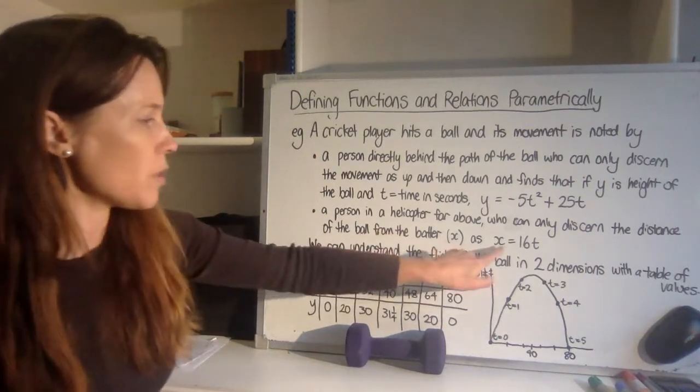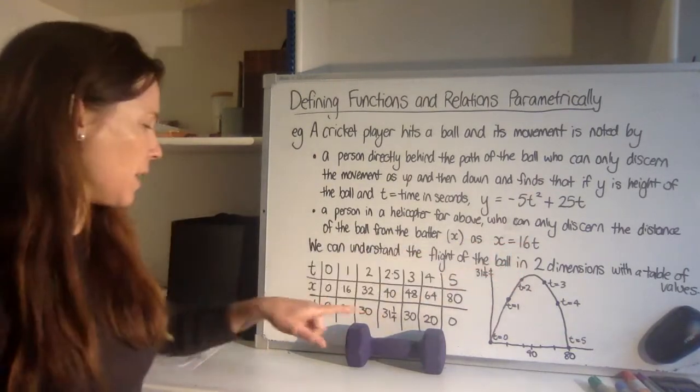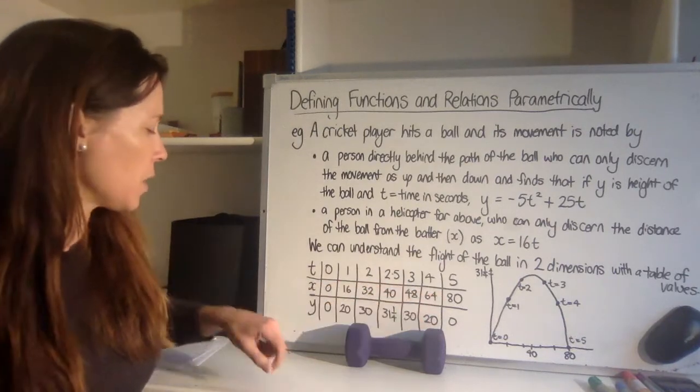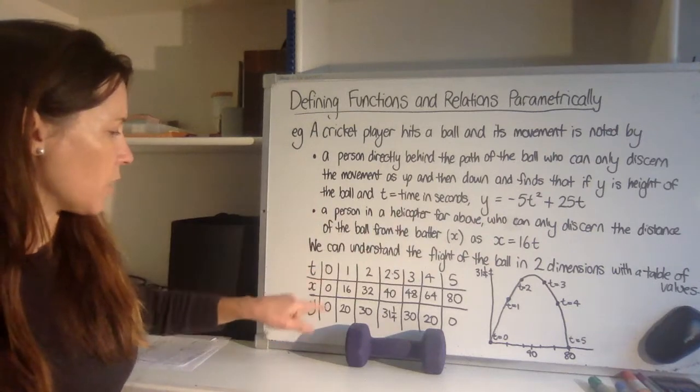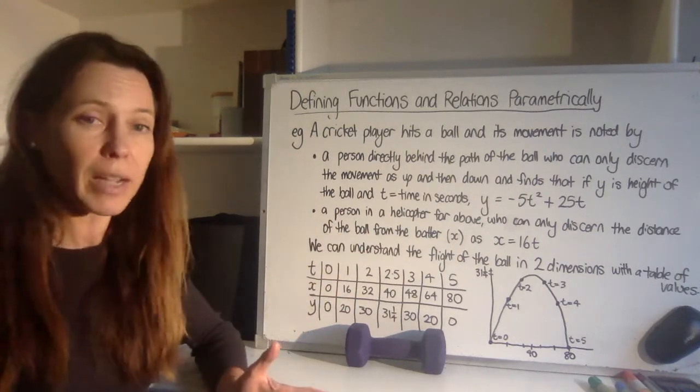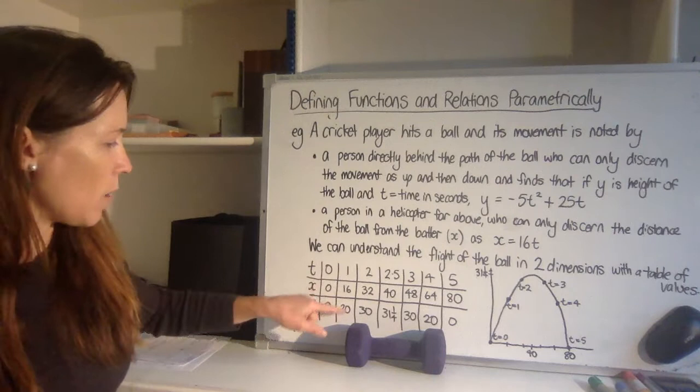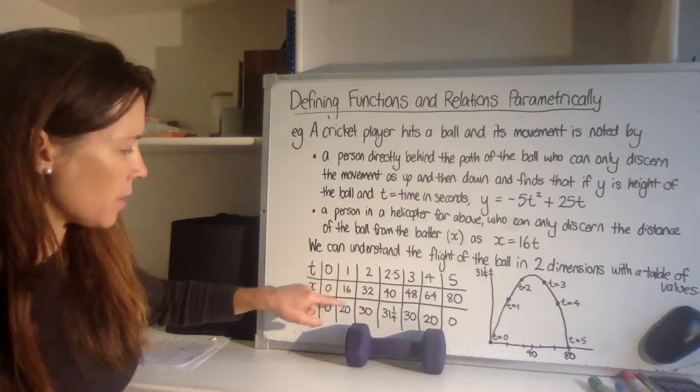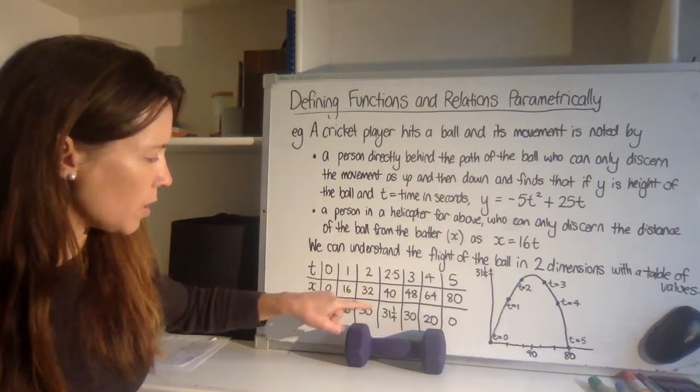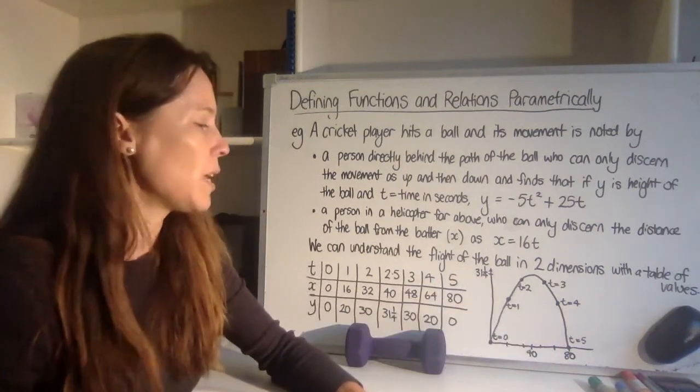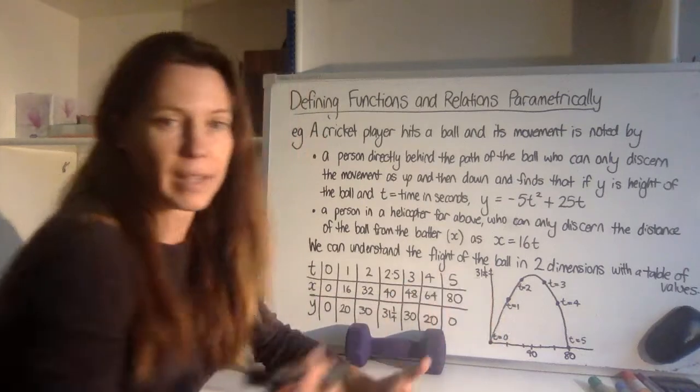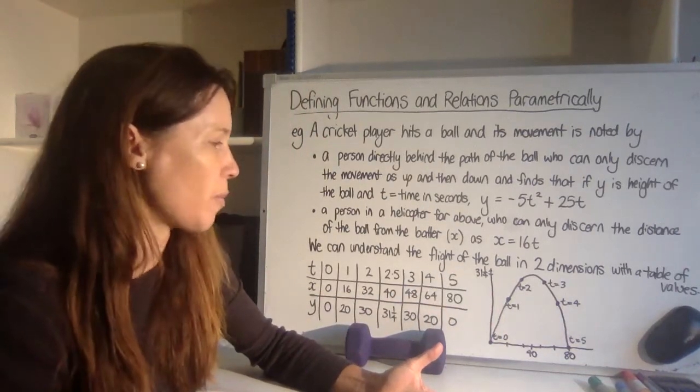I can then use this formula to find out what x would be at any one time, and these are just going up by 16. And I can use this formula to find out what the height of the ball would be according to the time. Now I can actually graph these x and y coordinates, 0, 0, 16, 20, 32, 30, 40, 31 and a quarter, et cetera, like this over on a Cartesian plane. And that gives me something of a picture of the flight of the ball from the side.